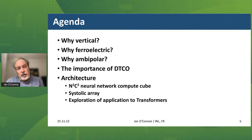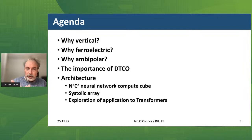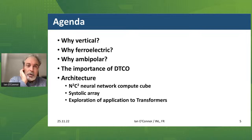I'm going to start with three technological flavors: vertical, ferroelectric, and ambipolar — very new and original devices which we're combining into a single device to see what happens in a 3D architecture. Why vertical? Why ferroelectric? Why ambipolar? And how can we put them all together? An important aspect with any emerging technology is that we are working with an immature technology that has not had all the technological investment and CAD investment yet.